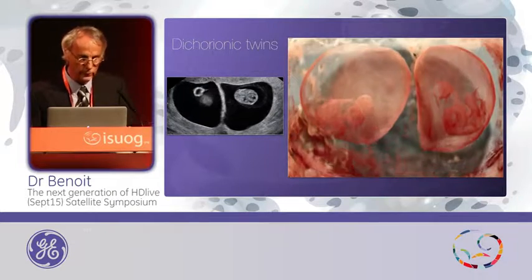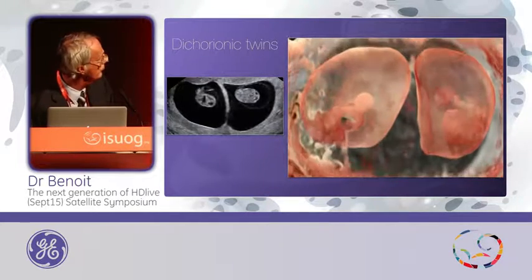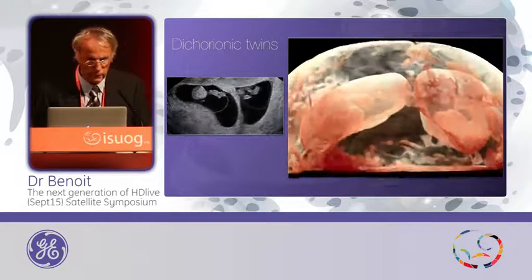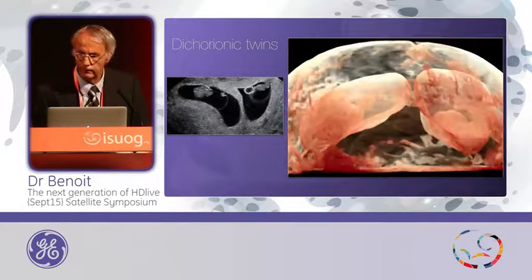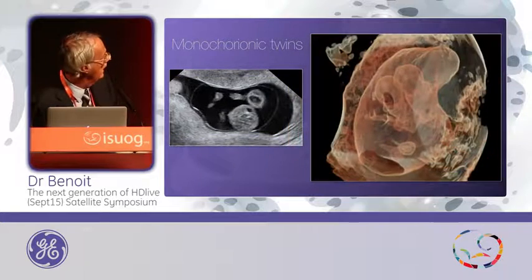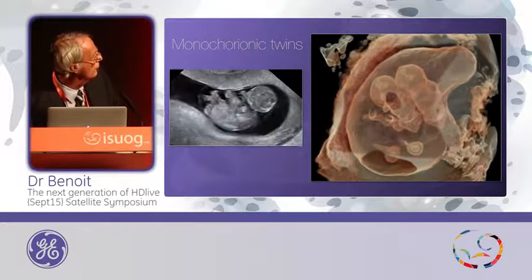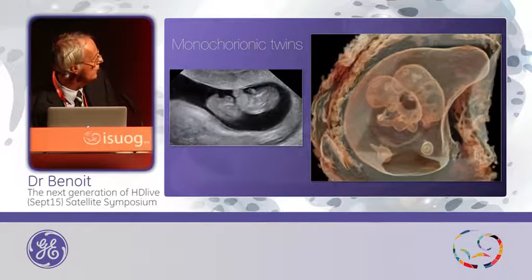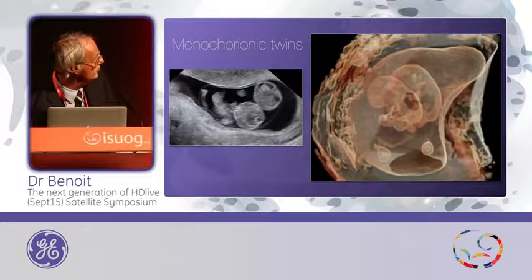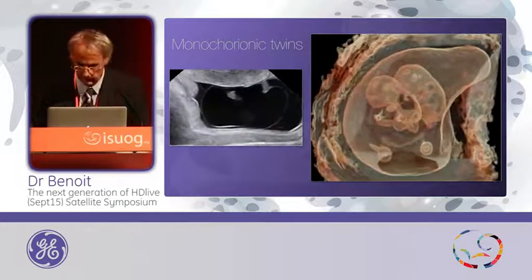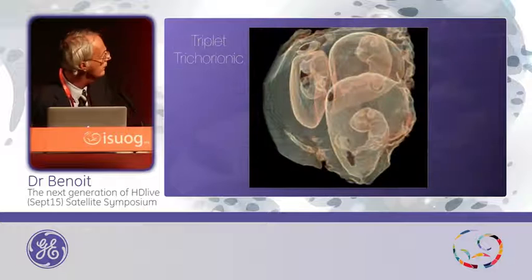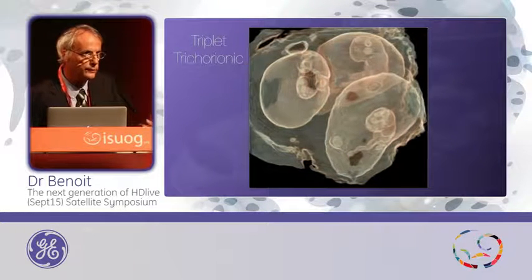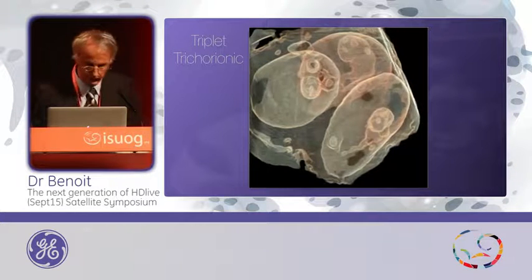I really like to use this in cases of twin pregnancy, because twin pregnancy makes it difficult to provide good 3D images. In this case, we choose a volume without cutting the volume, and this is the result with silhouette mode. This is another one — a monochorionic twin case, also monoamniotic twins, where you can clearly see the two embryos. For triplet, it's really difficult to give a 3D picture, but if you play with the silhouette and transparency, you can obtain this.